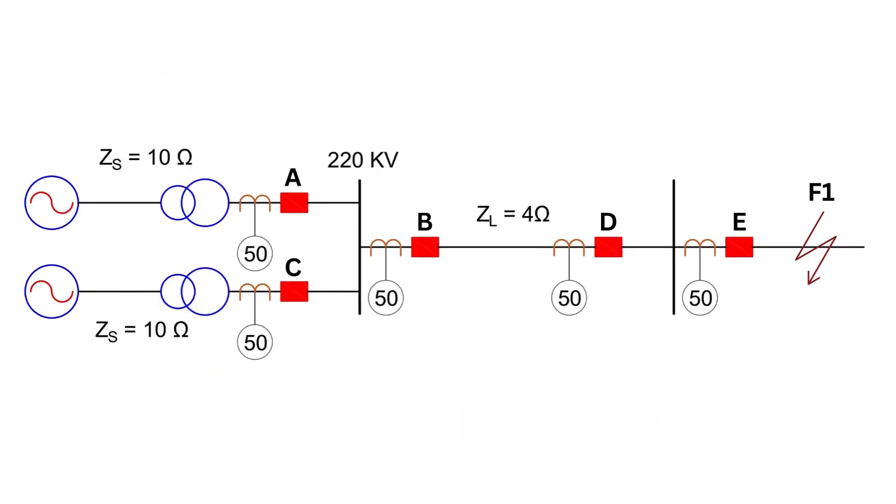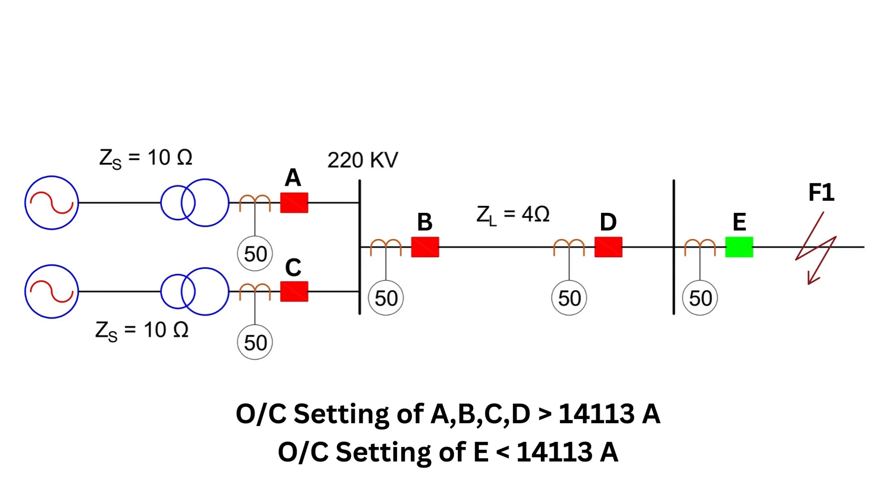To isolate this fault, only the breaker at point E should trip while keeping the rest of the system energized. In power systems, the goal is to isolate only the faulty section without disturbing healthy sections. Therefore, the setting of the overcurrent relay for the other breakers should be higher than 14,113 amperes, while the setting of the overcurrent relay for breaker E should be lower than this value to ensure that only breaker E trips for this fault.